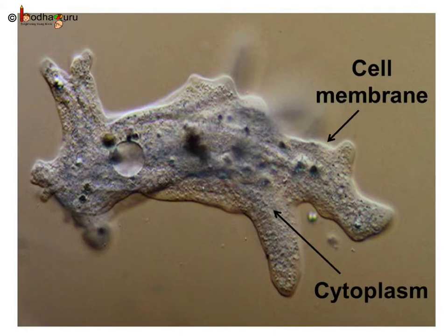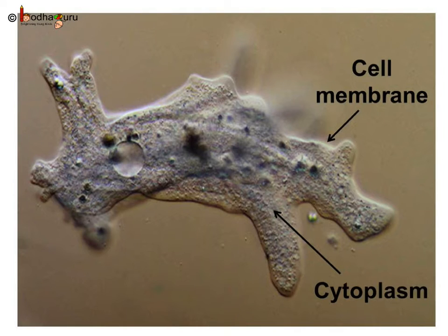Now let us look into a cell. A living cell is like a small piece of jelly with a coating. This coating is the cell membrane. That jelly-like part inside is the cytoplasm. The cell membrane separates a cell from other cells and controls wisely what goes in and what goes out of the cell.